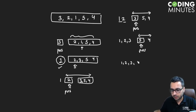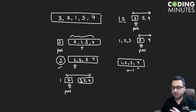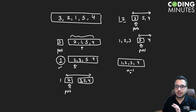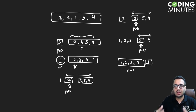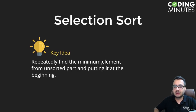If you sort n minus one elements of the array — meaning you've found the correct elements for the first n minus one positions — then automatically the last element will be in the right position. This is the whole idea of selection sort. It's a very simple and easy algorithm to implement, and in the next lecture we will discuss the implementation.